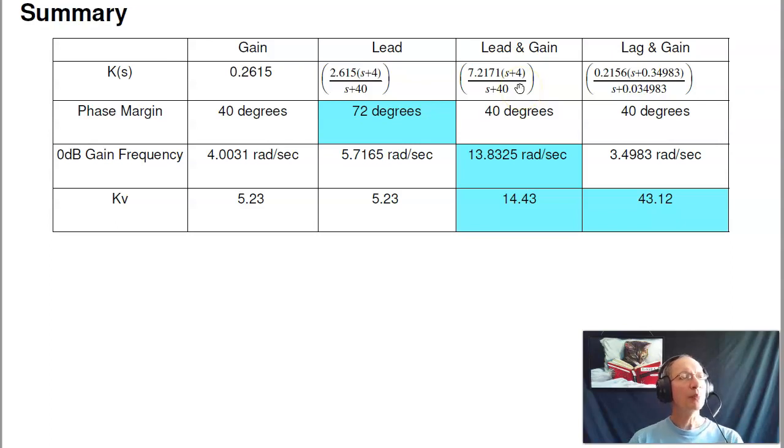The problem is, suppose my design spec said kV has got to be at least 30. At this point, I am stuck. That's where lag compensator comes in. The lag compensator says, take the previous design, in which case that's actually more like the lead gain compensator. Take the previous design, throw in the lag compensator, and I'll have roughly the same zero dB gain frequency, but the error constant is now 10 times higher.